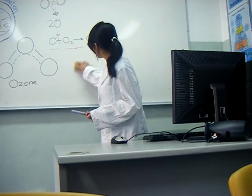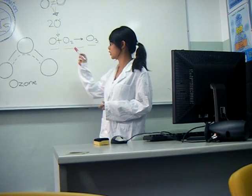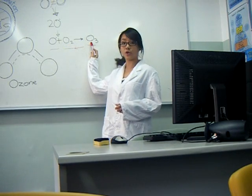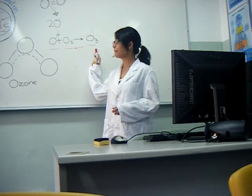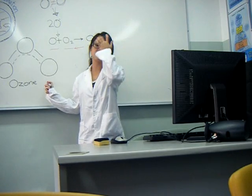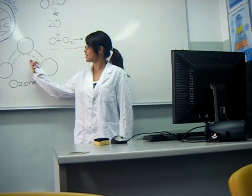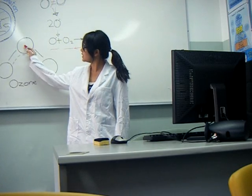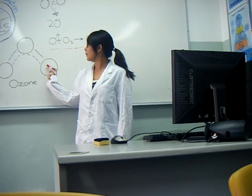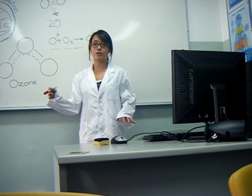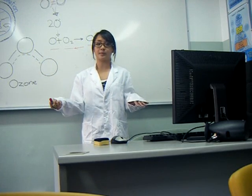What happens is these oxygen radicals then react with more oxygen molecules to make ozone. Now, if you look at the ozone structure itself, it has a resonance structure, which means that between these oxygens, the bond is actually somewhere in between a single bond and a double bond.